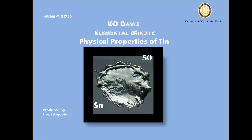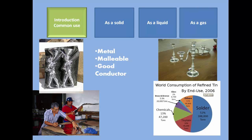UC Davis Elemental Minute: Physical Properties of Tin. Tin has the atomic number of 50, falling into group 14. Tin is commonly used to coat other metals to prevent oxidation. Due to its metallic nature, it works as a conductor and is very malleable.